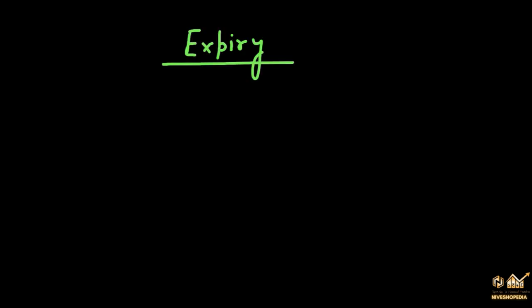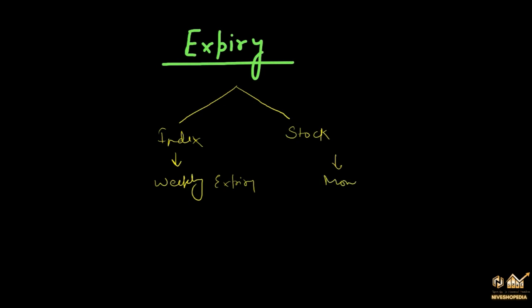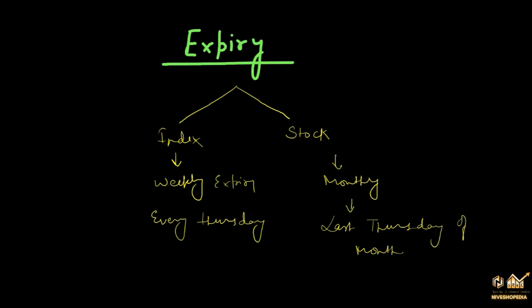Before moving further, let's understand the expiry date of an option contract. Every option contract has a certain time duration and will expire on specific dates already fixed by NSE. You have the option to trade either on index or on stocks. For index — Nifty or Bank Nifty — it is a weekly expiry. For stocks, it is always monthly. There are no weekly expiry stock options. The expiration date is every Thursday for index options, and the last Thursday of the month is the expiry for stock options.